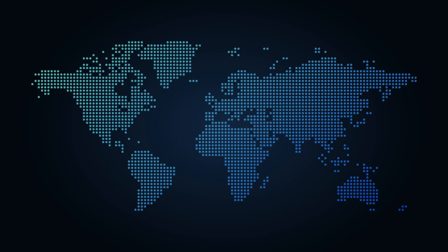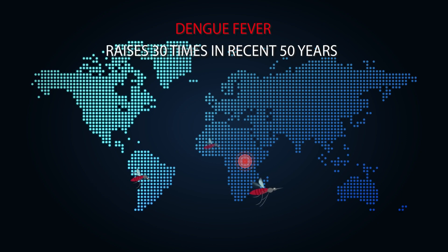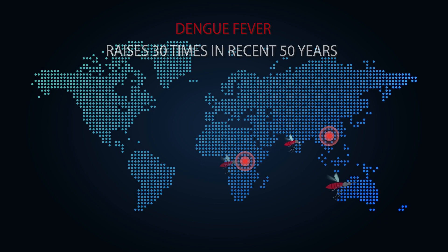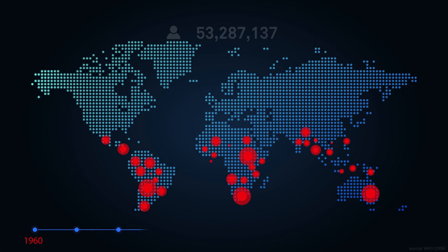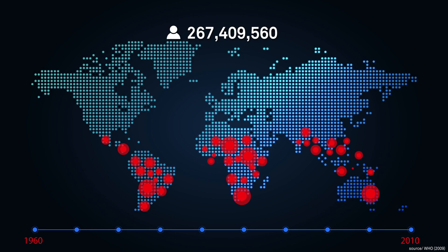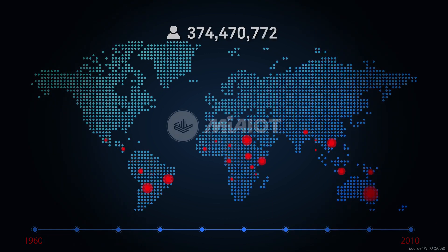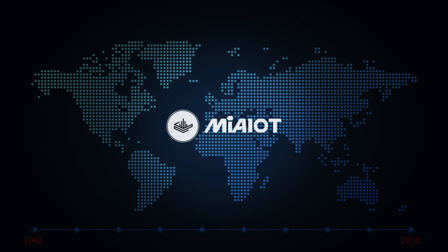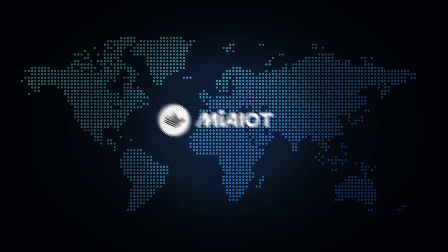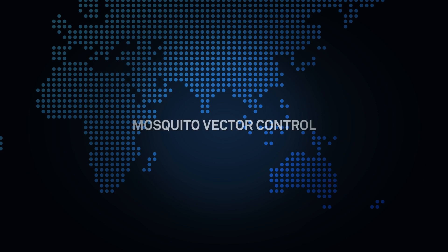Due to climate change, dengue is now estimated to occur annually in over 100 endemic countries. MyAIoT Smart City Platform has identified the problem and proposed solutions for vector mosquito control.